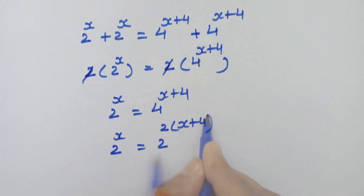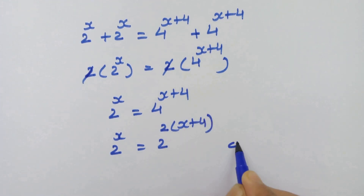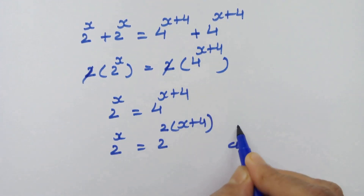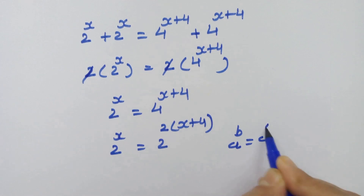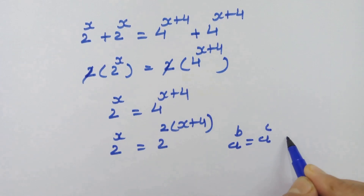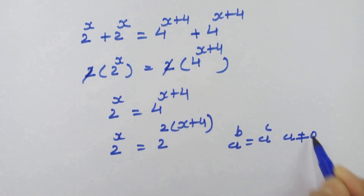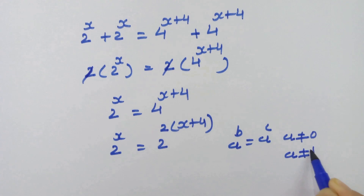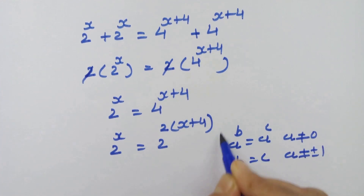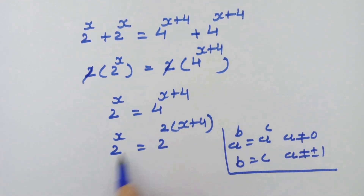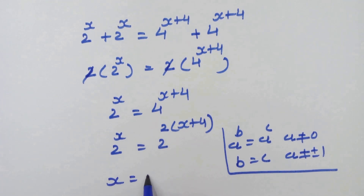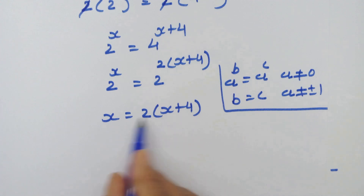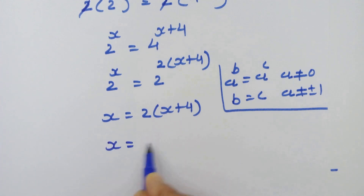Now 4 is 2 squared, so we can write 2 raised to 2 into x plus 4. Now we have the same base on both sides. If we have a raised to b equal to a raised to c, where a is not equal to 0 and a is not equal to plus or minus 1, then we can equate the exponents by using this rule.